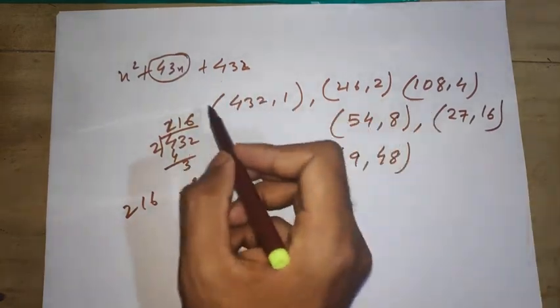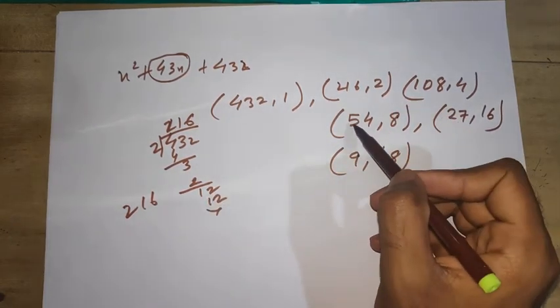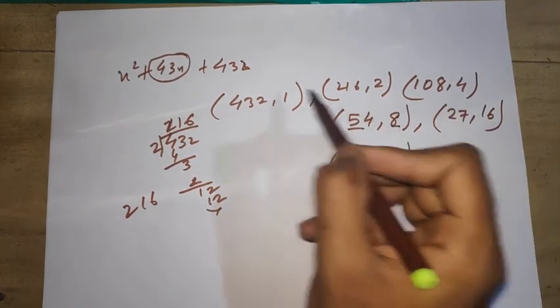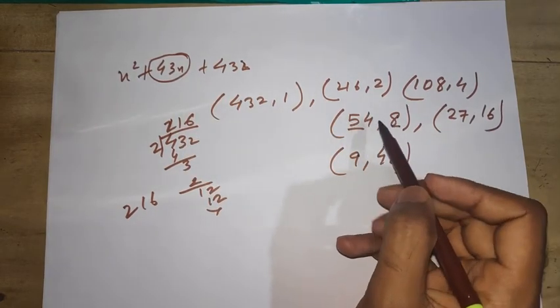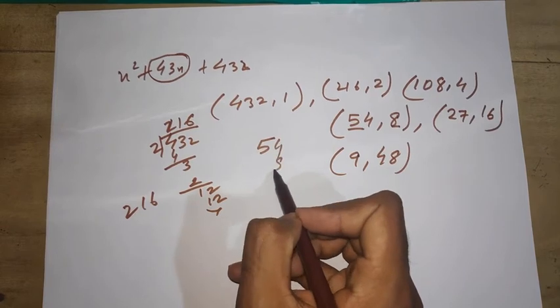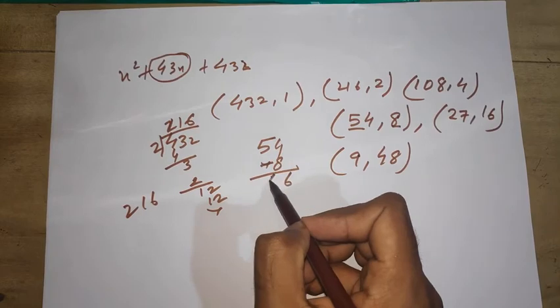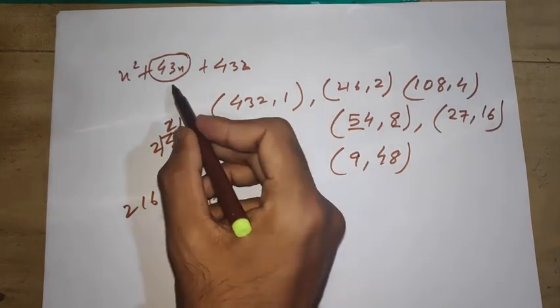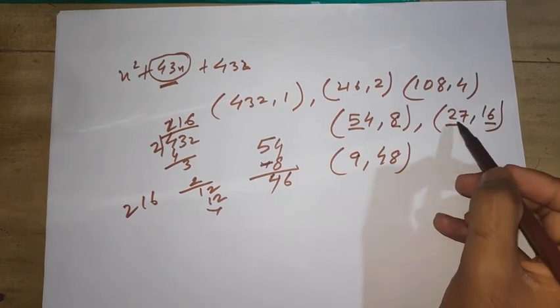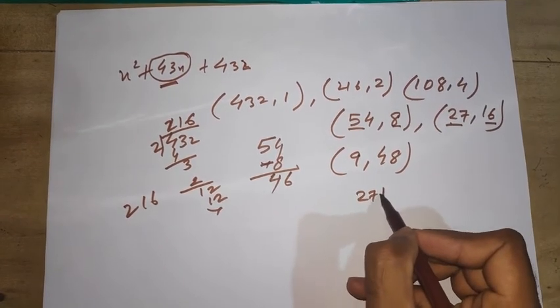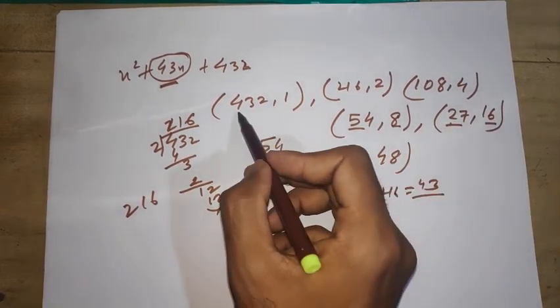Now see which combination by addition or subtraction will give you 43. If you add 54 and 8, will you get 43? No, that will be more than 60. If you subtract, 54 minus 8 is 46, not 43.